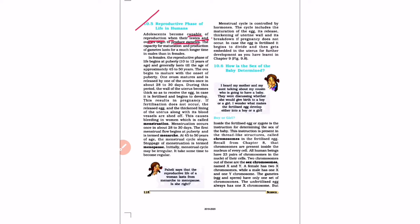The capacity for maturation and the production of gametes lasts for a much longer time. In females, the reproductive phase of life begins at puberty, i.e. 10 to 12 years of age, and generally lasts till approximately 45 to 50 years of age.